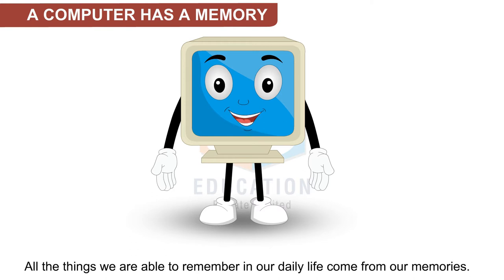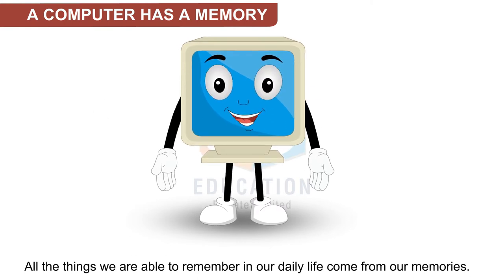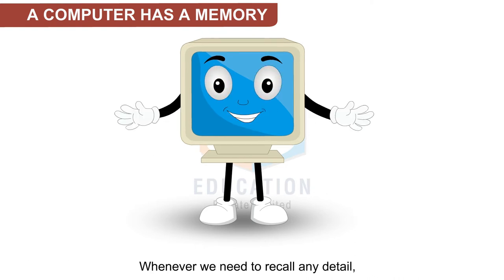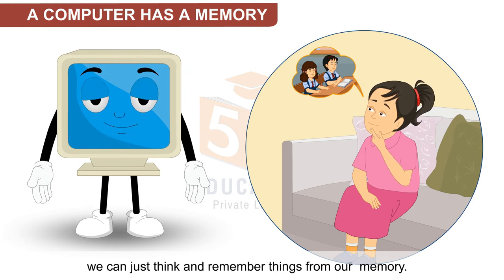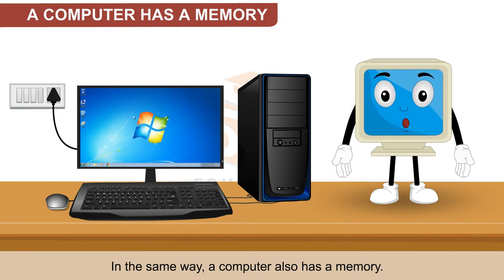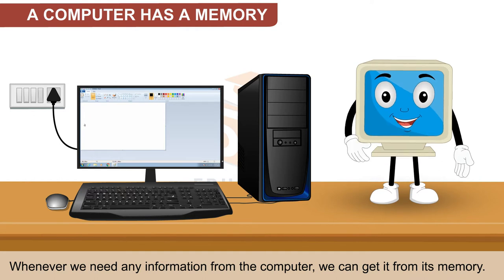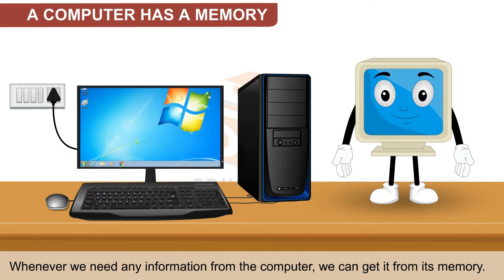All the things we are able to remember in our daily life come from our memories. Whenever we need to recall any detail, we can just think and remember things from our memory. In the same way, a computer also has a memory. Whenever we need any information from the computer, we can get it from its memory.